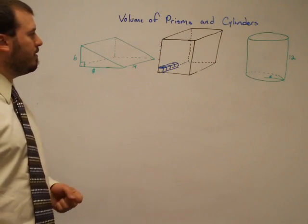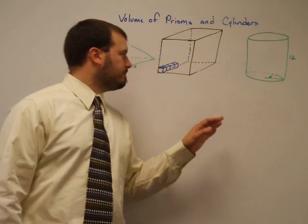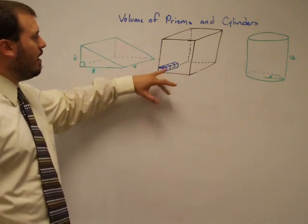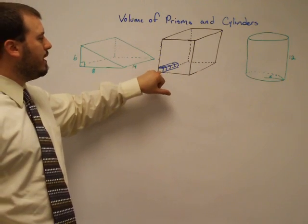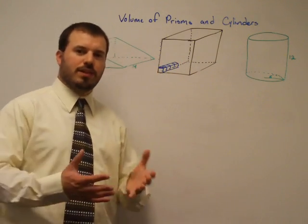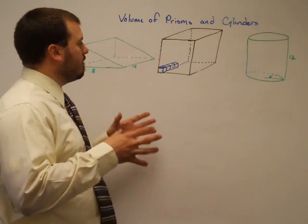So how do you find the volume, in general, of a prism or a cylinder? The basic idea, if you look at the center picture, is how many of these one-by-one cubes can we fit inside the figure? That's what volume is, how much space is there on the inside that we can fit into there.